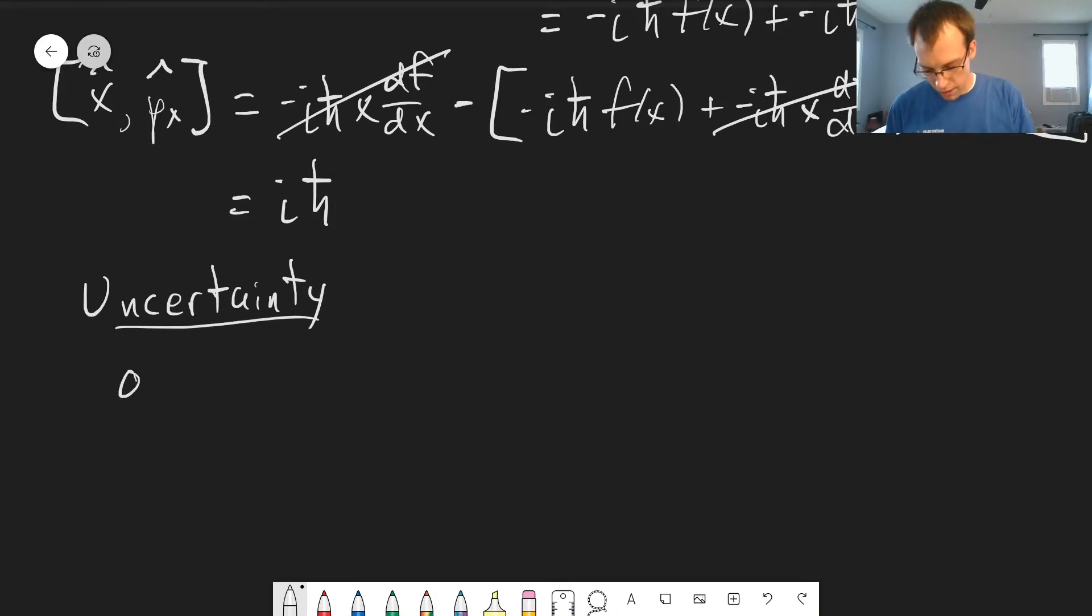If we remember, we defined sigma a squared for some observable a as equal to the expectation value of a squared minus the expectation value of a squared. We looked at this in the last chapter. We're not going to show this, but we're going to look at the final result.